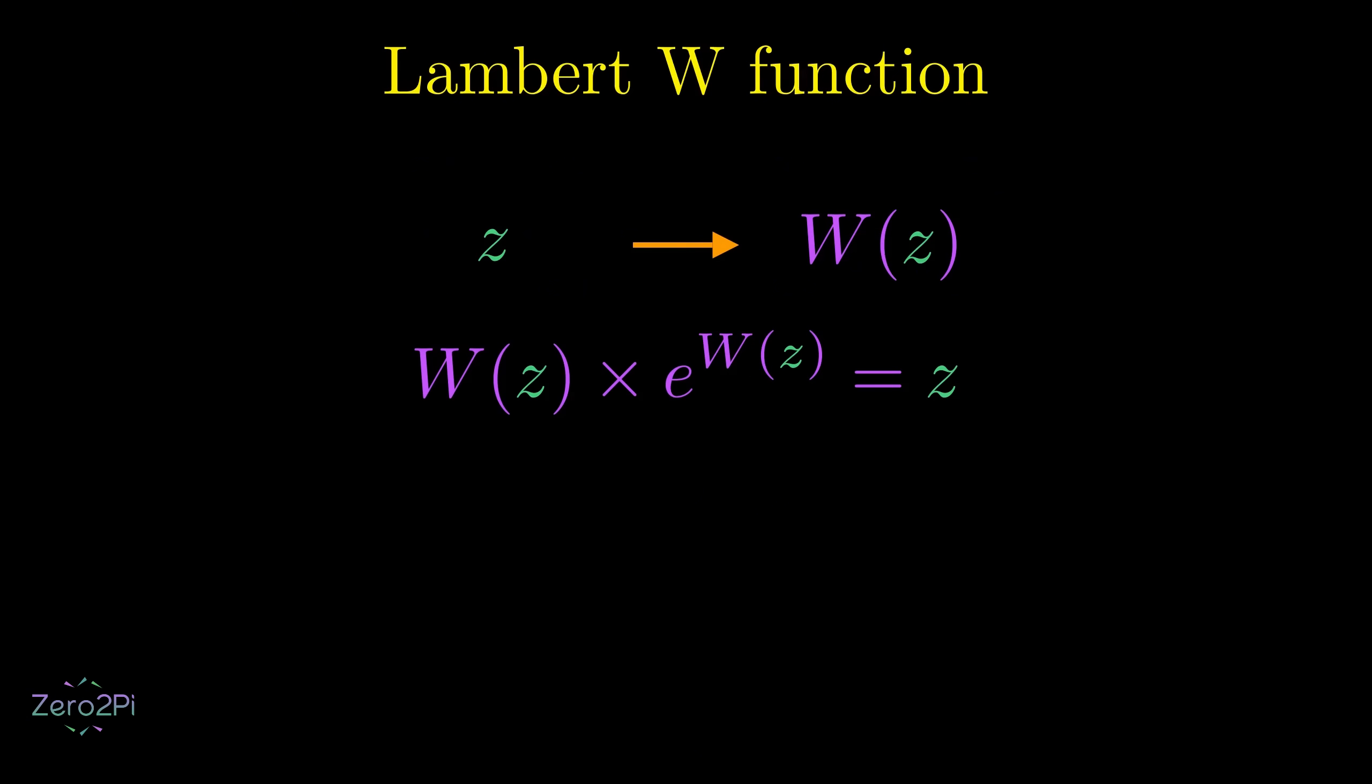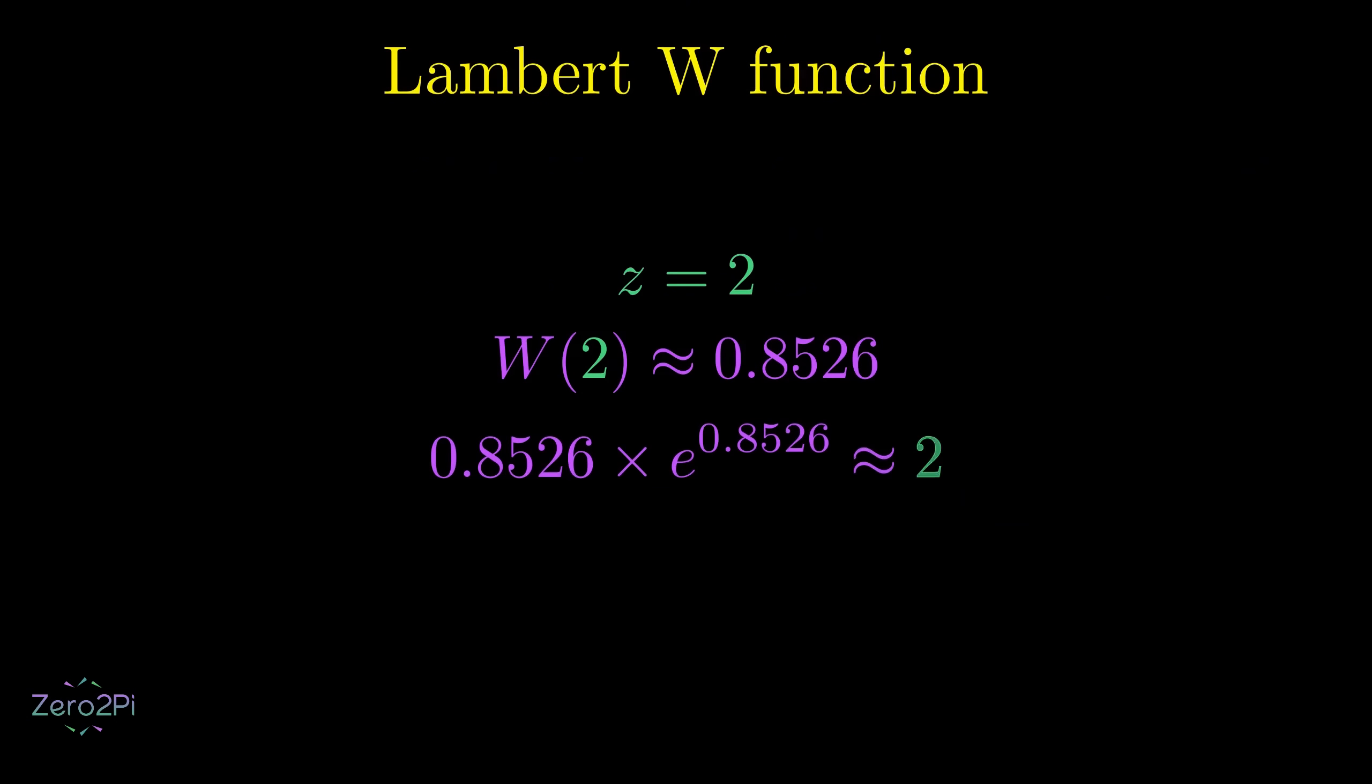To better understand it, suppose z equals 2. If we plug 2 into the Lambert W function, it gives us approximately 0.8526. Now, take that value and multiply it by e to the power of 0.8526. You get approximately 2.